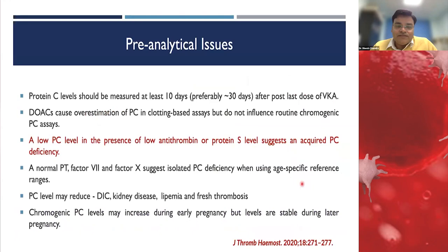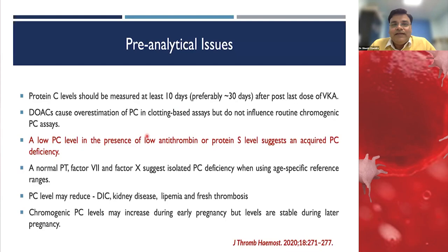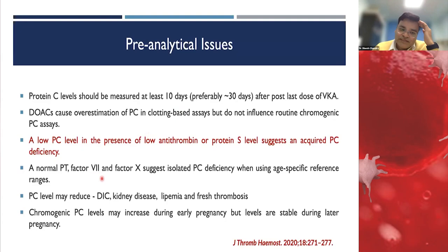Important pre-analytical issues: do not collect during acute phase or while on anticoagulant. Direct oral anticoagulants can give false negative results, though chromogenic testing can mitigate this. If protein C, protein S, and antithrombin are all low simultaneously, consider an acquired condition such as DIC rather than inherited deficiency, since all three proteins are unlikely to be deficient together. Also remember age-appropriate reference ranges, particularly in infants and children — most proteins C and S normalize by six months to one year of age.